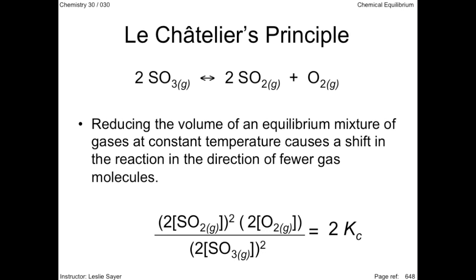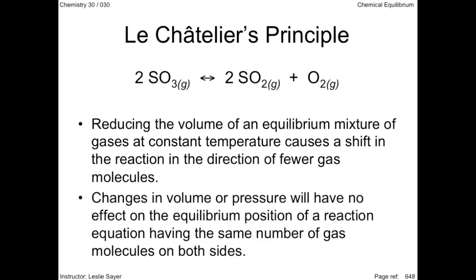Another way to look at this: if you have to decrease the total number of gas molecules in a mixture, it makes sense to convert three gas molecules—an oxygen molecule and two sulfur dioxide molecules—to two gas molecules, two sulfur trioxide molecules. You get less total amount of gas molecules. Changes in volume or pressure will have no effect on the equilibrium position of a reaction equation having the same number of gas molecules on both sides.